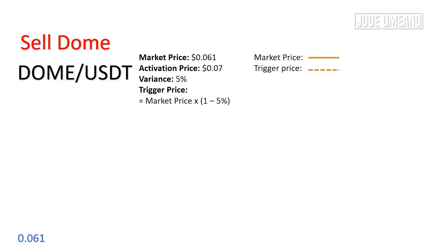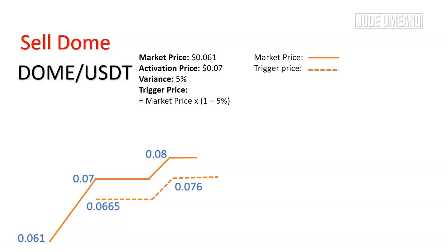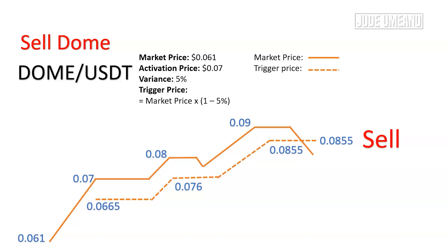Dome is at $0.061. According to our prediction, the price of Dome goes up and gets to $0.07 — at this point we have hit the activation price and the trigger price is activated at $0.0665. If Dome keeps going up to $0.08 the trigger price will also go up. If the price starts coming down, the trigger price remains the same and does not move. If Dome keeps going up to $0.09, the trigger price will be $0.0855. At this point Dome starts to fall, and when it falls and crosses the trigger price our Dome will sell — so instead of selling at $0.07, we have sold at $0.0855, giving us a much higher profit.